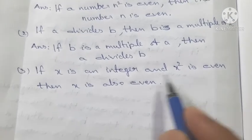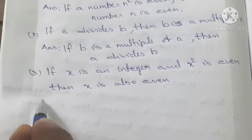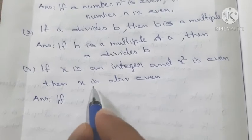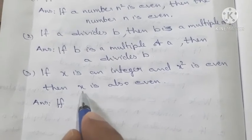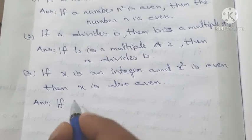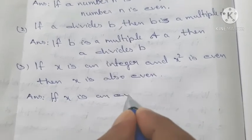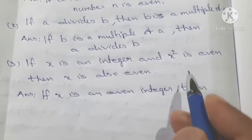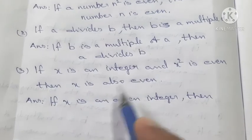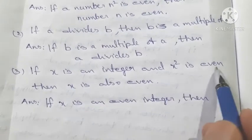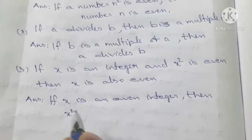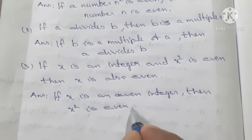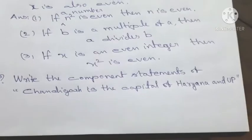If x is an integer and x squared is even then x is also even. The converse: if x is an even integer, then x squared is even.